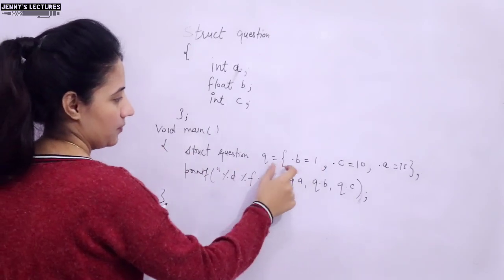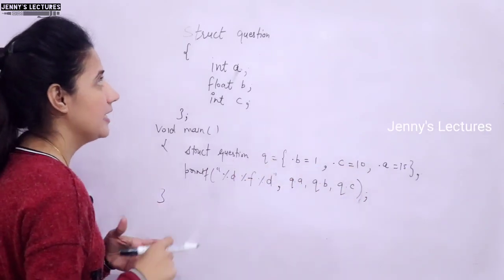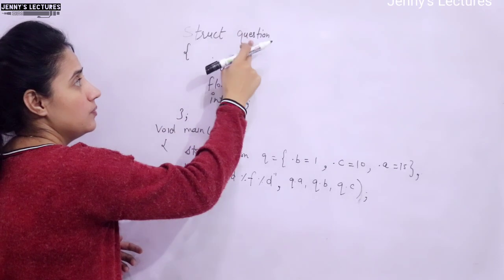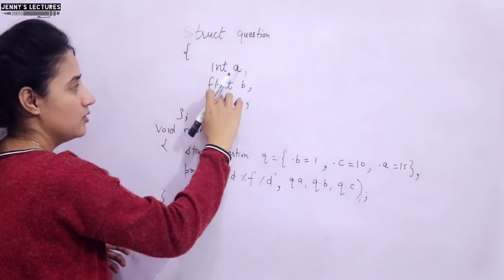Because we have initialized, see, the members something like this. This is what designated initialization is. The meaning I will tell you. Here we are having the structure. The name of the structure is question. Three members are there. Int, two are integer, one is float.